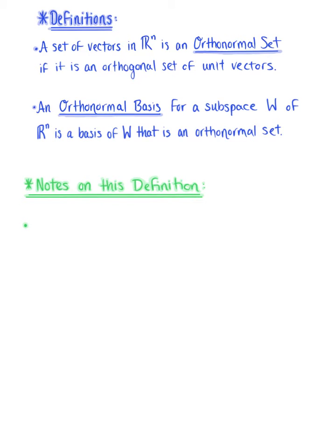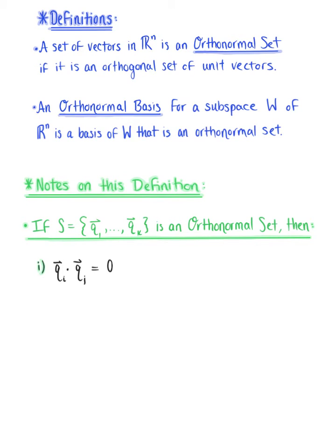So our first note, if S is equal to the set of vectors, say vector q sub 1 through vector q sub k, and if S is an orthonormal set, then we know that the dot product of vector q sub i with vector q sub j is equal to zero. And we know this because all pairs of distinct vectors in the set are orthogonal.